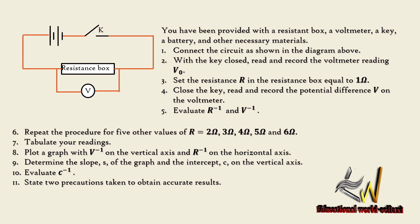Plot the graph of the inverse of V on the vertical axis and the inverse of R on the horizontal axis. Determine the slope of the graph and the intercept C on the vertical axis. Evaluate the inverse of C, and state two precautions taken to obtain accurate results.